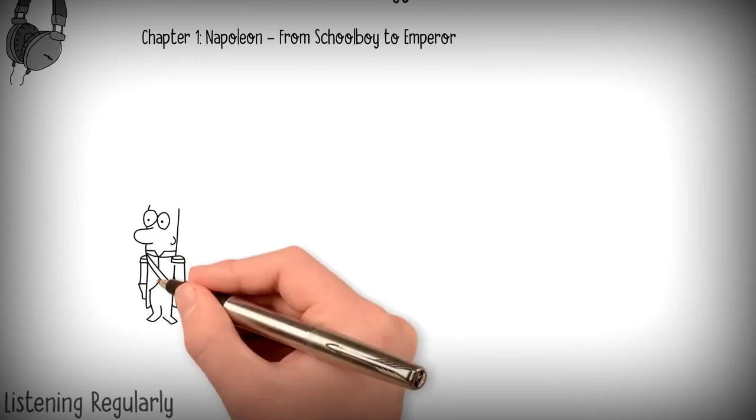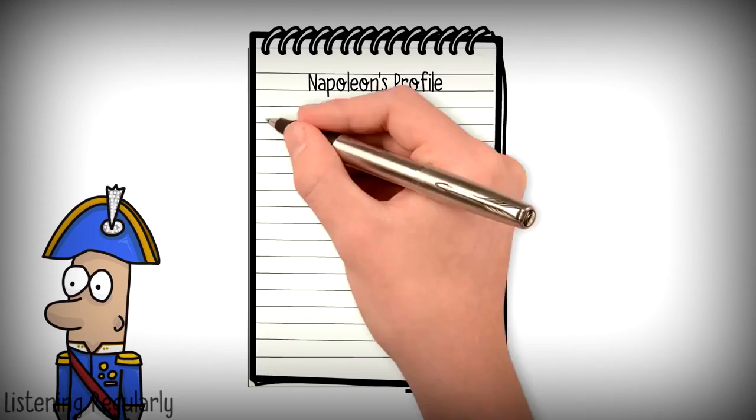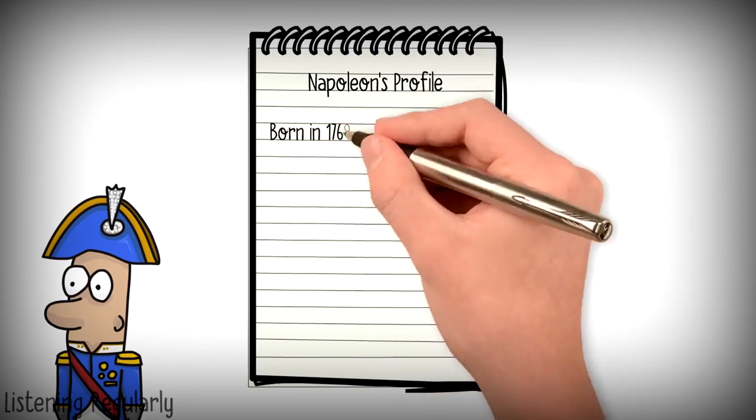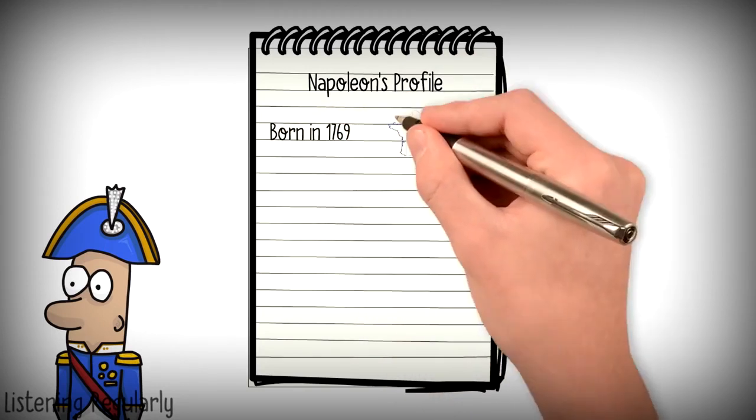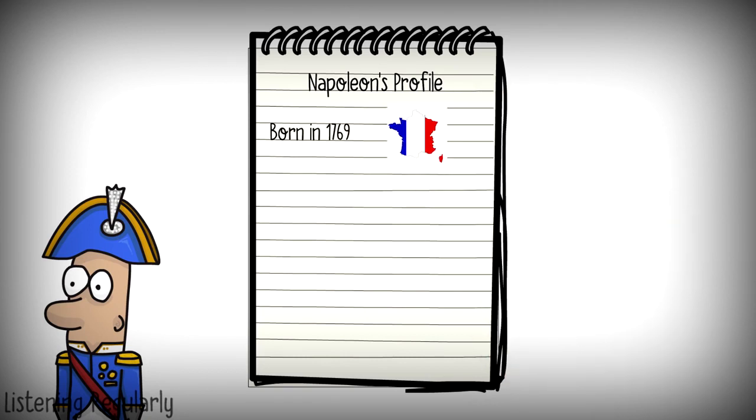Napoleon was a French soldier who became Emperor of France. He was born in 1769 on the island of Corsica. When he was only 10 years old, his father sent him to military school in France.